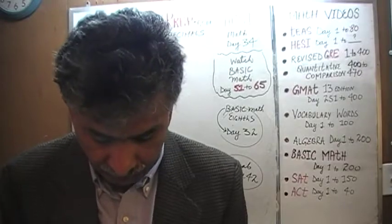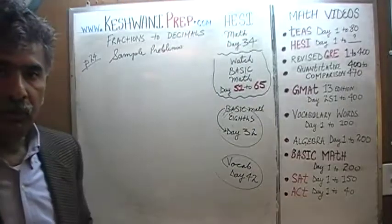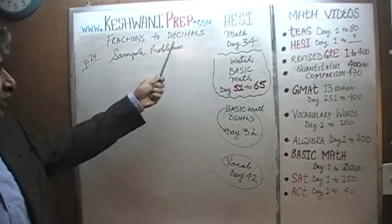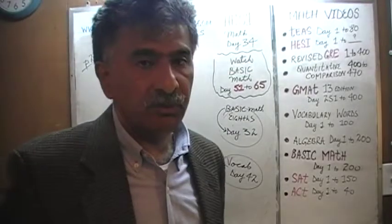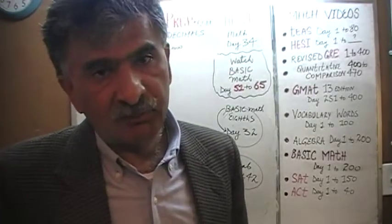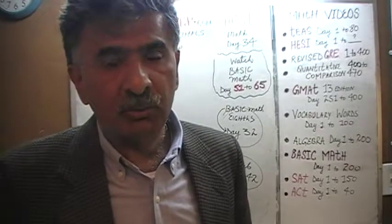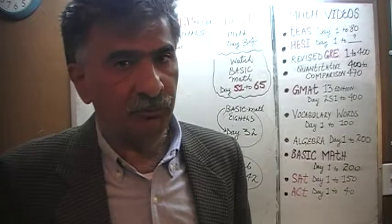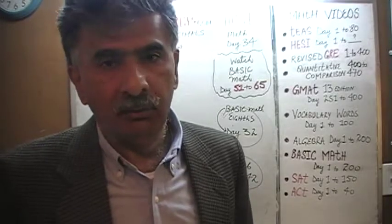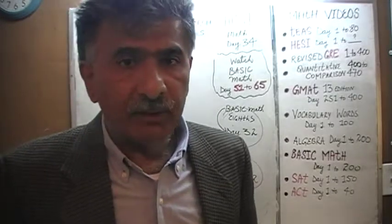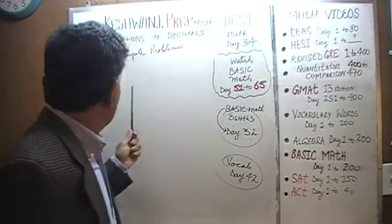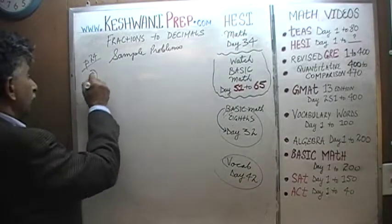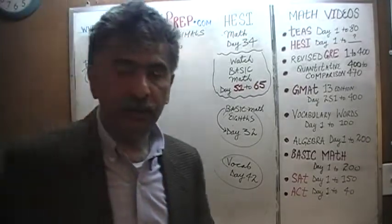Right now we are in the process of solving problems having to do with conversions from fractions to decimals. There are three concepts they test on the exam: fractions, decimals, and percentages. You have to be able to go back and forth — from percentages to fractions, from fractions to decimals, from decimals to percentages, and so on. We did problems one through seven yesterday; we are on page 24, and today we are going to do questions 8, 9, and 10.